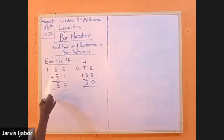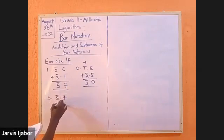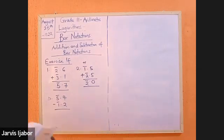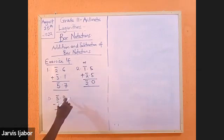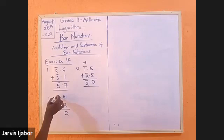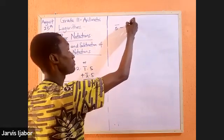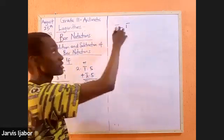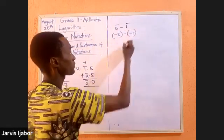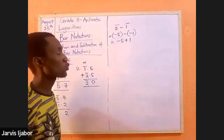Let's go to subtraction now. Let me take question 5. I have bar 5.4 minus bar 1.2. This one is simple subtraction. 4 minus 2 will give me 2. Now, bar 5 minus bar 1. What is the mathematical interpretation of this? This is negative 5 minus negative 1, which will be negative 5 plus 1.